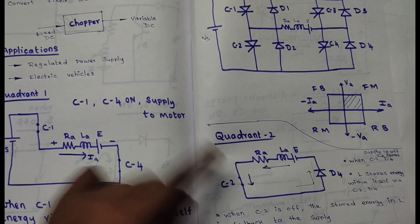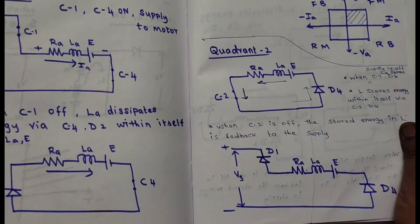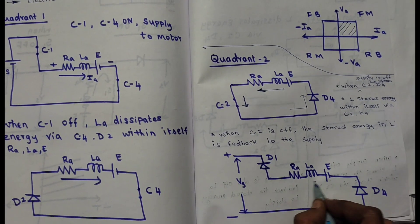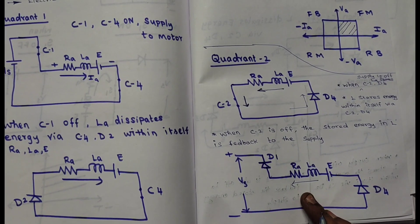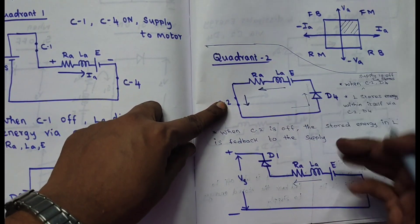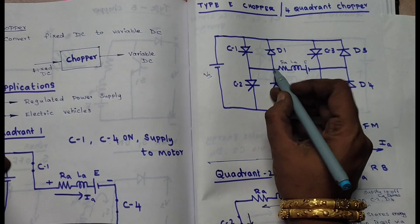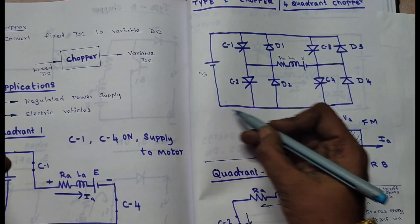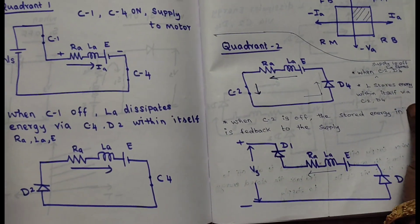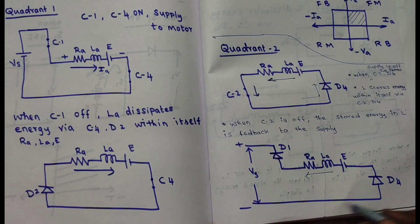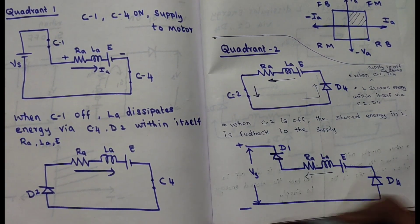When switch C2 is also turned off, the stored energy in the inductor is fed back to the supply in the negative direction. The energy is returned to the supply via diodes D4 and D1 — the path is: motor → D1 → supply, with D4 also in the loop. This completes the quadrant 2 operation.